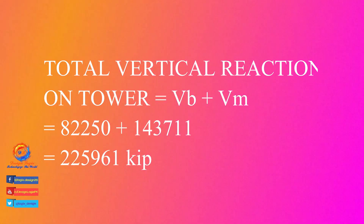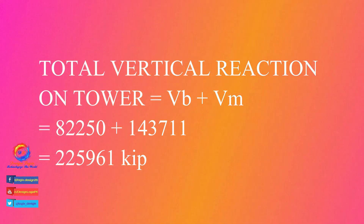The total vertical force that the towers support equals the sum of Vm and Vb — that is, the loads brought on by the main span plus the back span. Therefore, for this example, each tower carries 82,250 + 143,711 = 225,961 kips of load in compression.